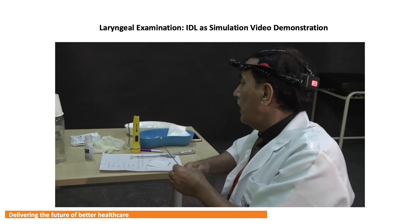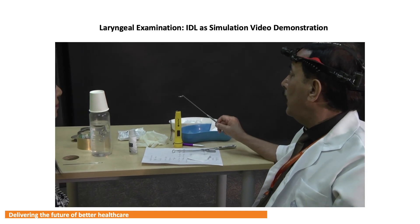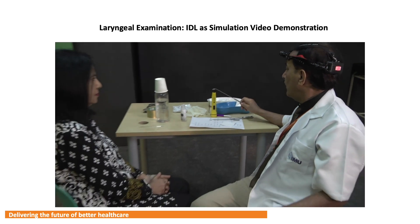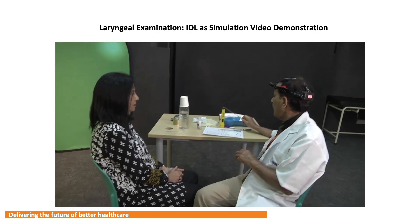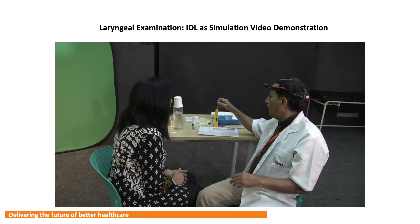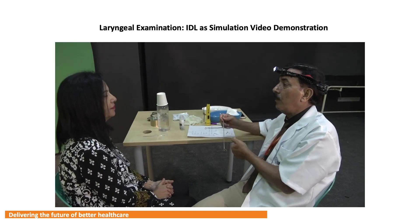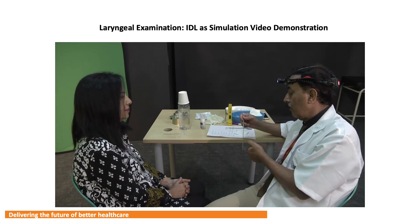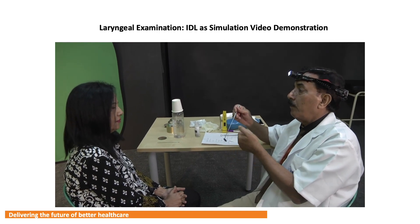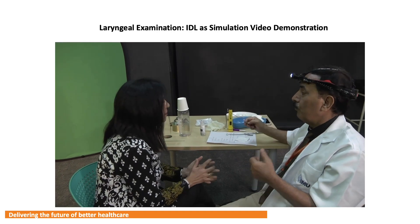Apart from these, we can either use a spirit lamp to warm up the mirror — warming from the mirror surface, not the metallic surface — or dip it in hot water, or apply an anti-fog solution. This is because when examining a patient who is breathing, there may be fogging on the mirror, so we use these three methods to avoid that.